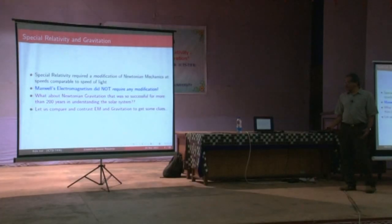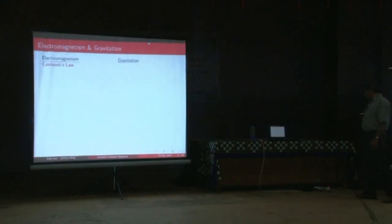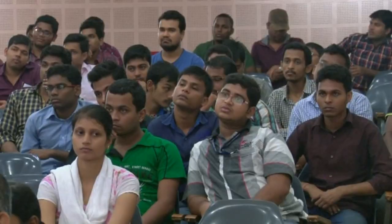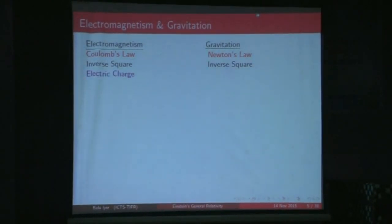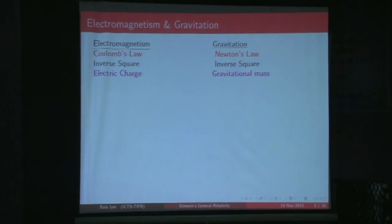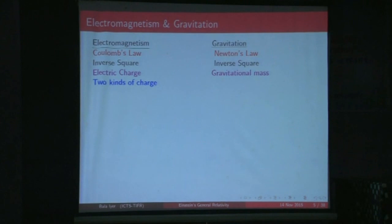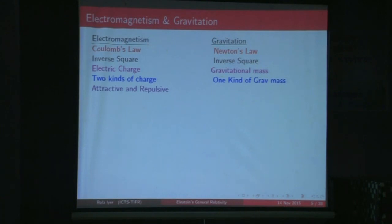To understand the difference between electromagnetism and Newtonian gravitation, let us compare at almost school level what the differences and similarities are. Electrostatics is given by Coulomb's law; gravity is described by Newton's law of gravitation — both are inverse square laws. Electrostatic forces are determined by electric charge; similarly it is the gravitational mass of a body which determines the gravitational force. There are two kinds of electric charge (positive and negative), so forces can be both attractive and repulsive, whereas there is only one kind of gravitational mass and the force is always attractive.